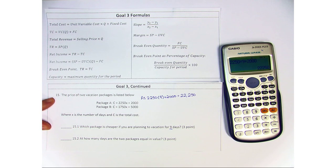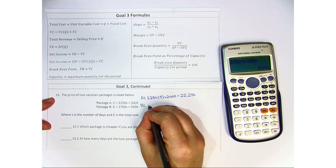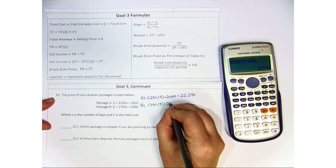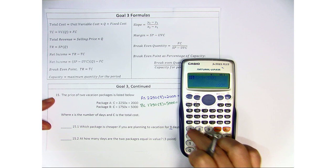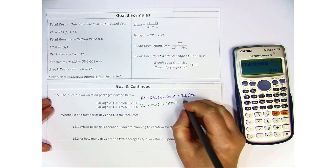Now looking at package B, we're going to do the same thing and substitute for 9. So package B is 1750 times 9, but it has a much higher initial cost of 5000. So 1750 times 9 plus 5000 gives us 20,750.